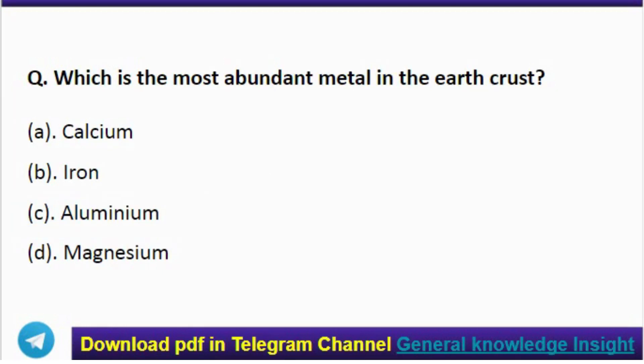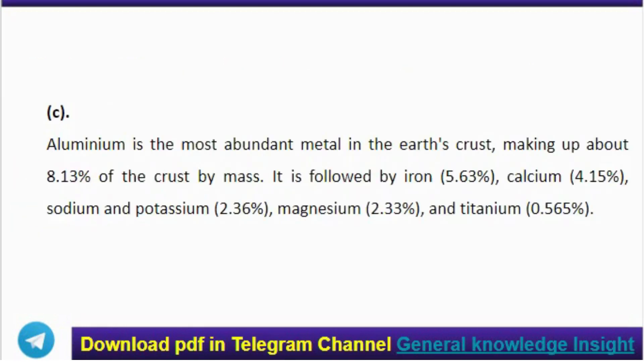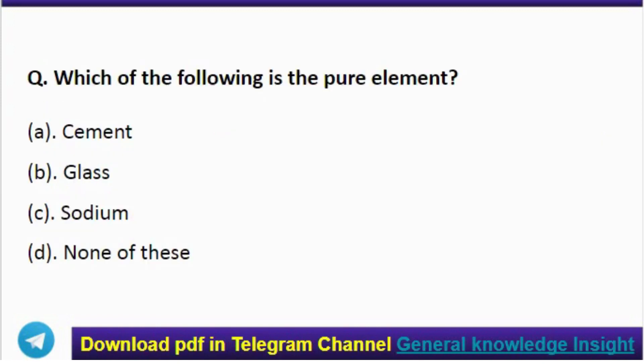Next question: what is the most abundant metal in the earth's crust? Correct answer: option C, aluminium. Aluminium is the most abundant metal in the earth's crust, making up about 8.13% of the crust by mass. It is followed by iron at 5.63%, calcium at 4.15%, sodium and potassium at 2.36%, magnesium at 2.33%, and titanium at 0.565%.